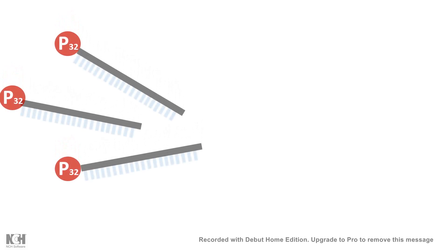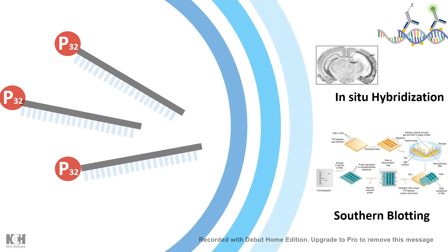Sometimes we need radiolabeled DNA to perform in situ hybridization or Southern blotting. In order to detect our nucleic acid of interest, we need a radiolabeled or other labeled probe.